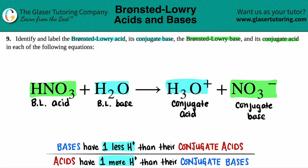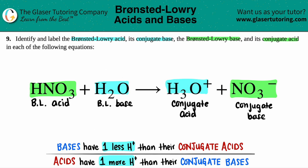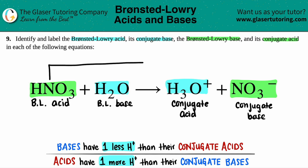Another thing to note: you can never have two acids on one side or two bases. It always has to be one acid and one base on each side. So if you accidentally put an acid where a base should be, go back and fix it. This is basically the answer, and now I'll draw the pairs — these go together and these go together.